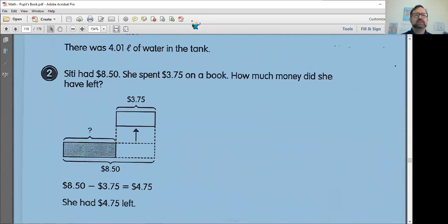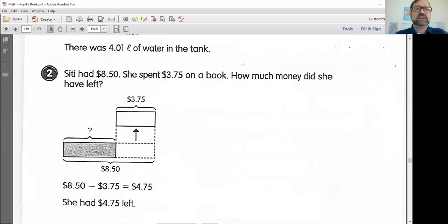Example two. Siti had $8.50. She spent $3.75 on a book. How much money did she have left? So once again, go back, get all this information. And I'm going to underline the word spent. If you spend money, that means you no longer have that money. This tells me I'm going to end up with less money than I started with less than this, $8.50, which means it's also, I'm going to underline this. How much money did she have left? This tells me, these are all things telling me this is a subtraction problem.